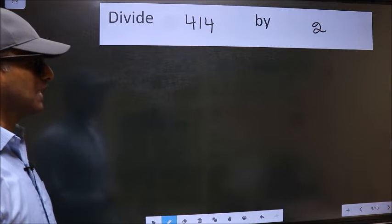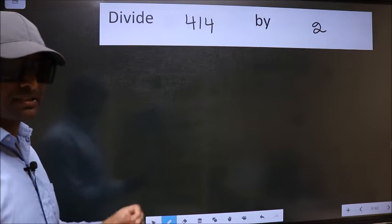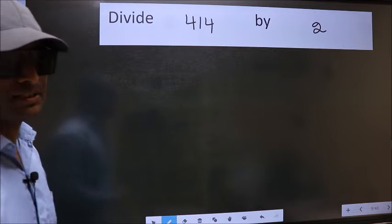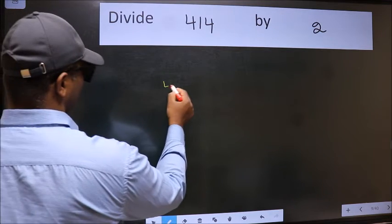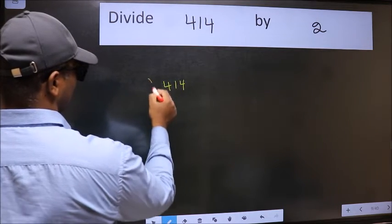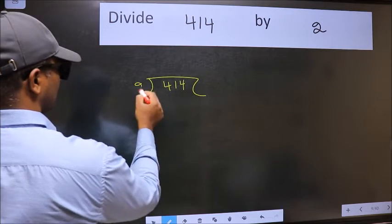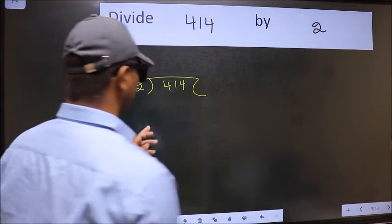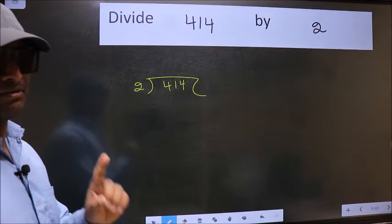Divide 414 by 2. To divide this, we should frame it in this way. 414 and 2 here. This is your step 1.